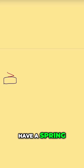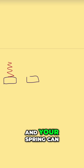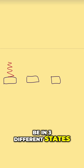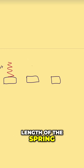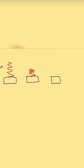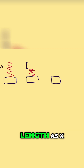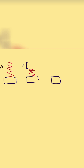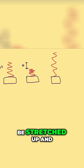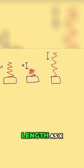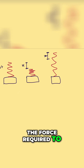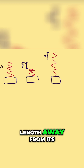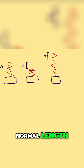Let's say you have a spring that can be in three different states. This is at rest — its natural length. This is the spring being pushed down, and we label the change in length as x. Your spring can also be stretched up, and we label this change in length as x.